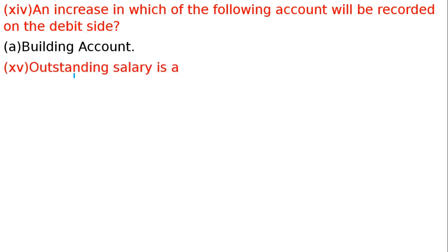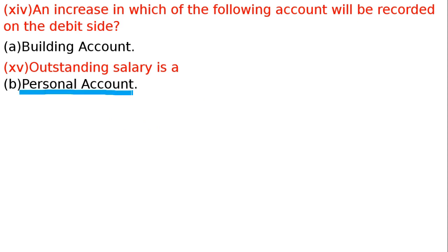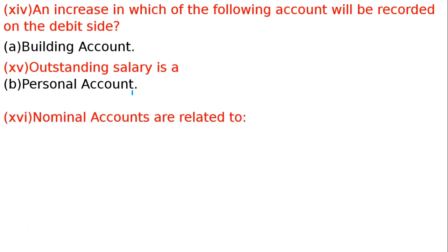15th question: Outstanding salary is which type of account? Outstanding salary is a personal account. Agar due date mein salary pay karo to salary account debit hota hai, and salary account is an expense account. Jab usko next day pay karoge after the due date — 31 tarikh ko dena tha, 30 ko de paye, to May 1 ya 10 ko pay karenge — we will be paying to the person. Outstanding salary, prepaid salary, income receivable, and income received in advance — ye sab personal accounts hote hain.